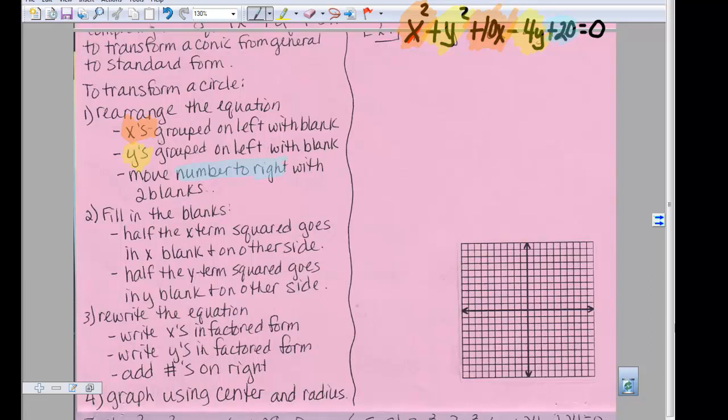To do this, we're going to use what we learned back in the quadratic section last semester and complete the square. So we're going to look at example one. There's three steps to do this and the first one says rearrange the equation, get the x's grouped on the left with a blank, the y's grouped on the left with a blank, and move the number to the right with two blanks. So looking at example one, let's take care of step one.